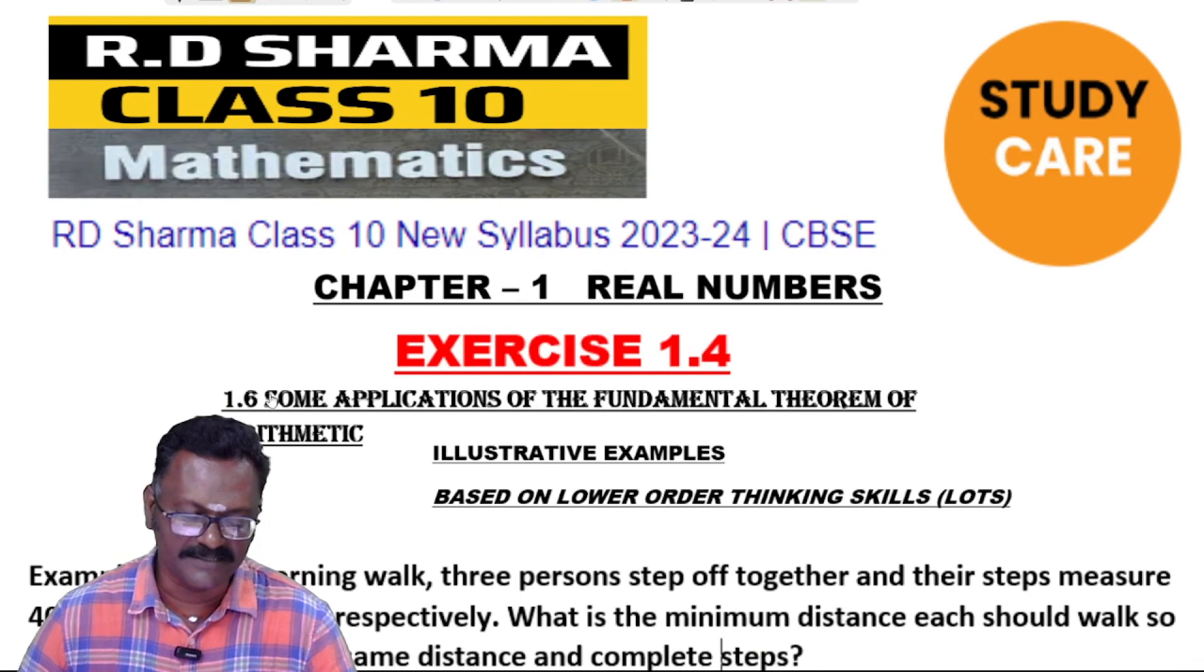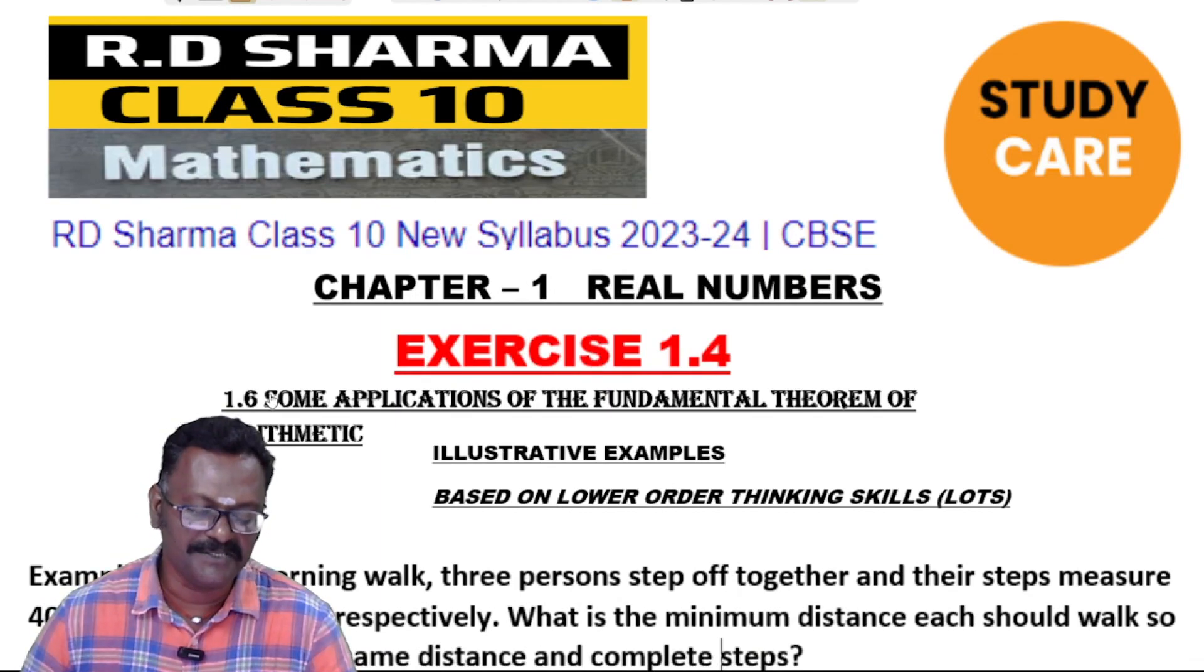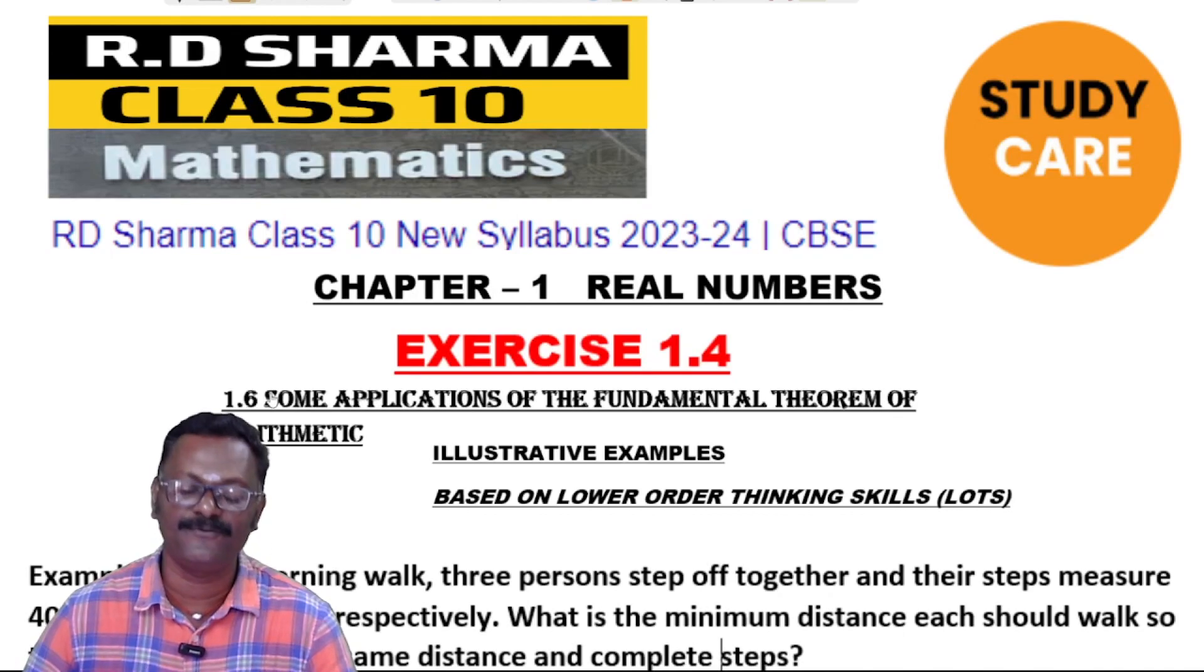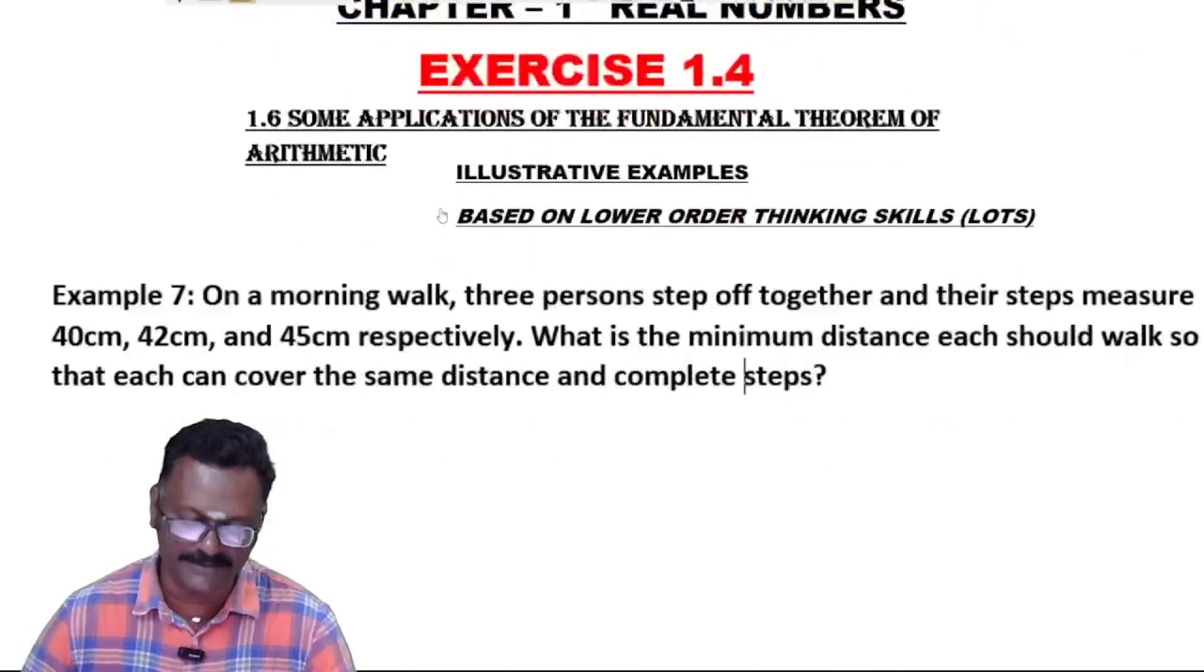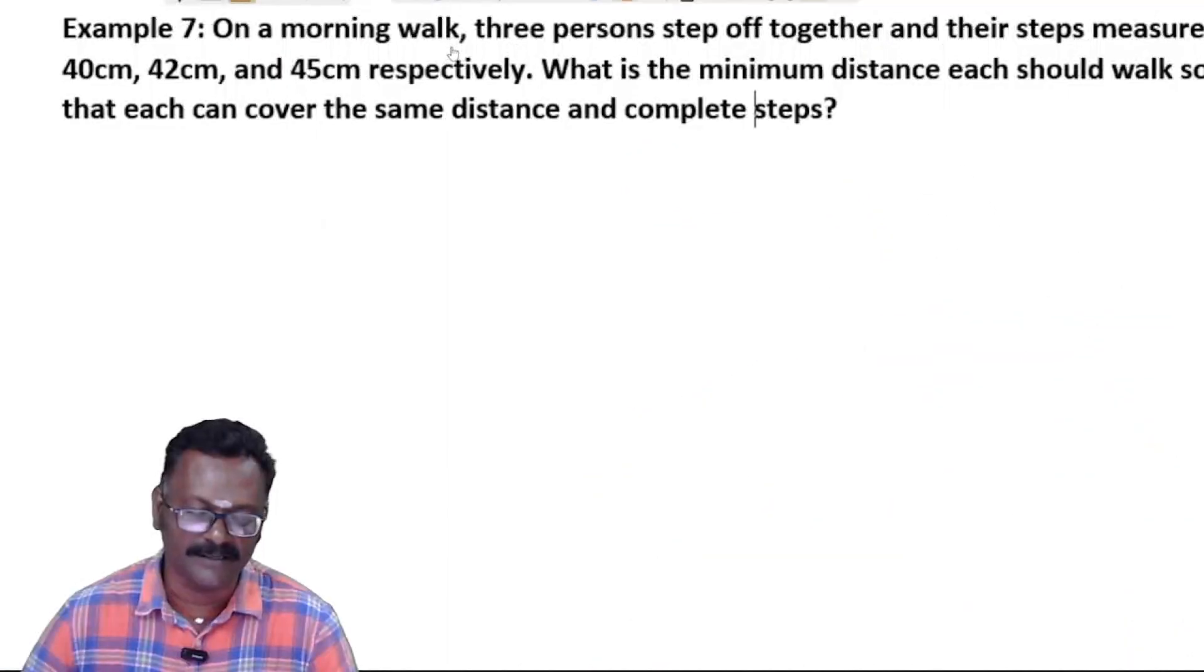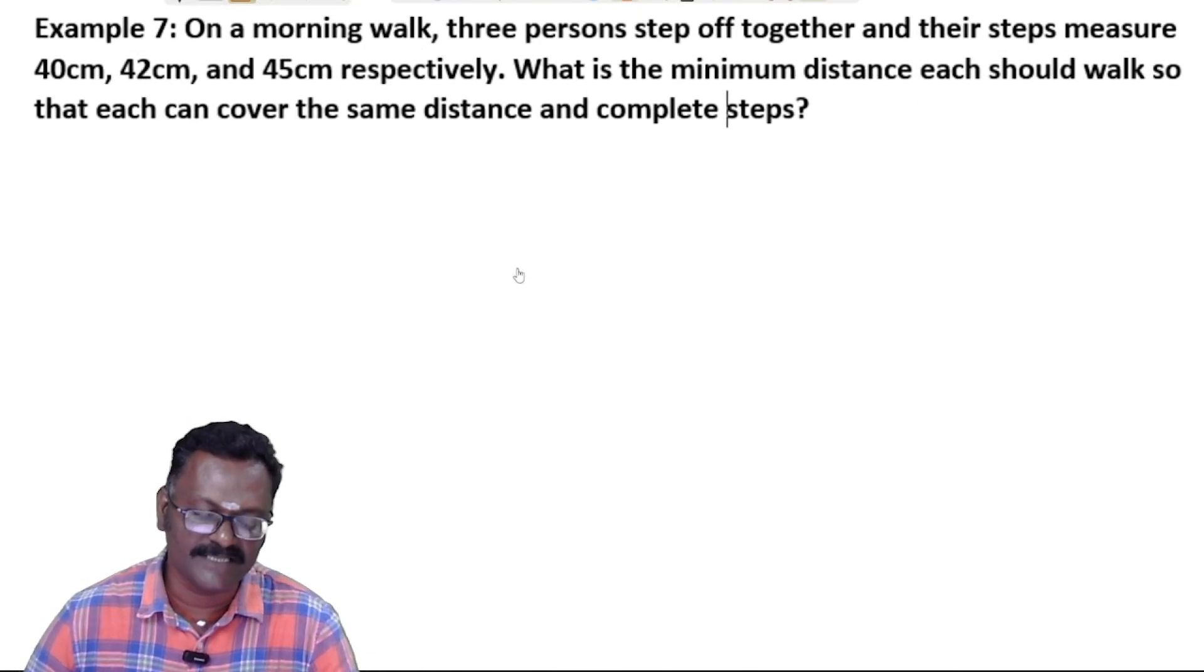Hi students, welcome to my channel Study Care. Example number 7: On a morning walk, three persons step off together and their steps measure 40 centimeter, 42 centimeter, and 45 centimeter respectively. What is the minimum distance each should walk so that each can cover the same distance and complete steps?